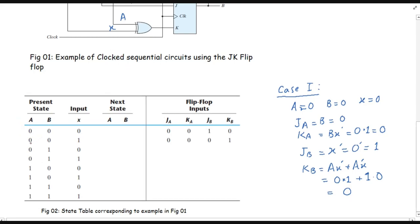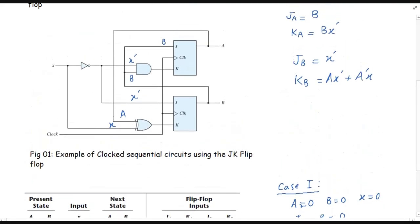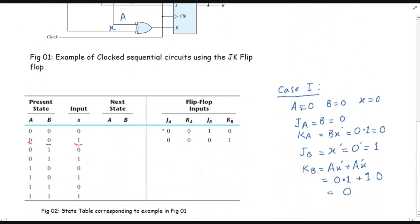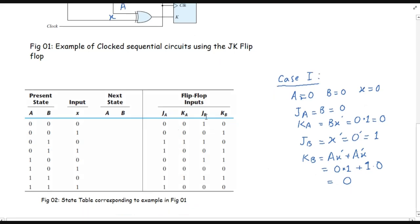Similarly, for case 2 where A = 0, B = 0, and x = 1, substituting into the input equations gives J_A = 0, K_A = 0, J_B = 0, and K_B = 1. Finding the values for all cases, we will have the complete input values table. We are now done with step number 2.